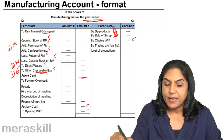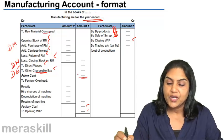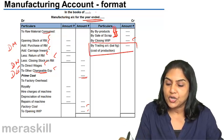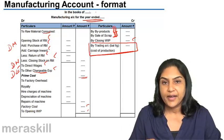So, by byproducts, by sale of byproducts, by sale of scrap, by closing work in progress, the balance is the cost of production, the cost of goods produced. And this is transferred to the trading account.